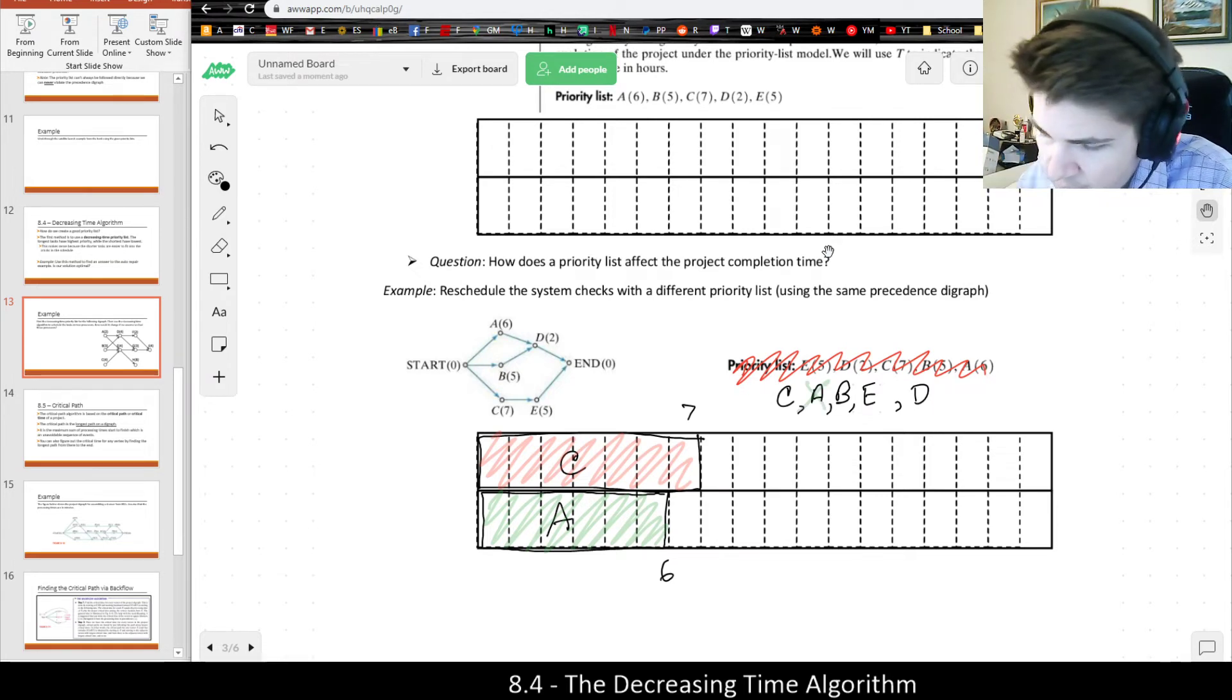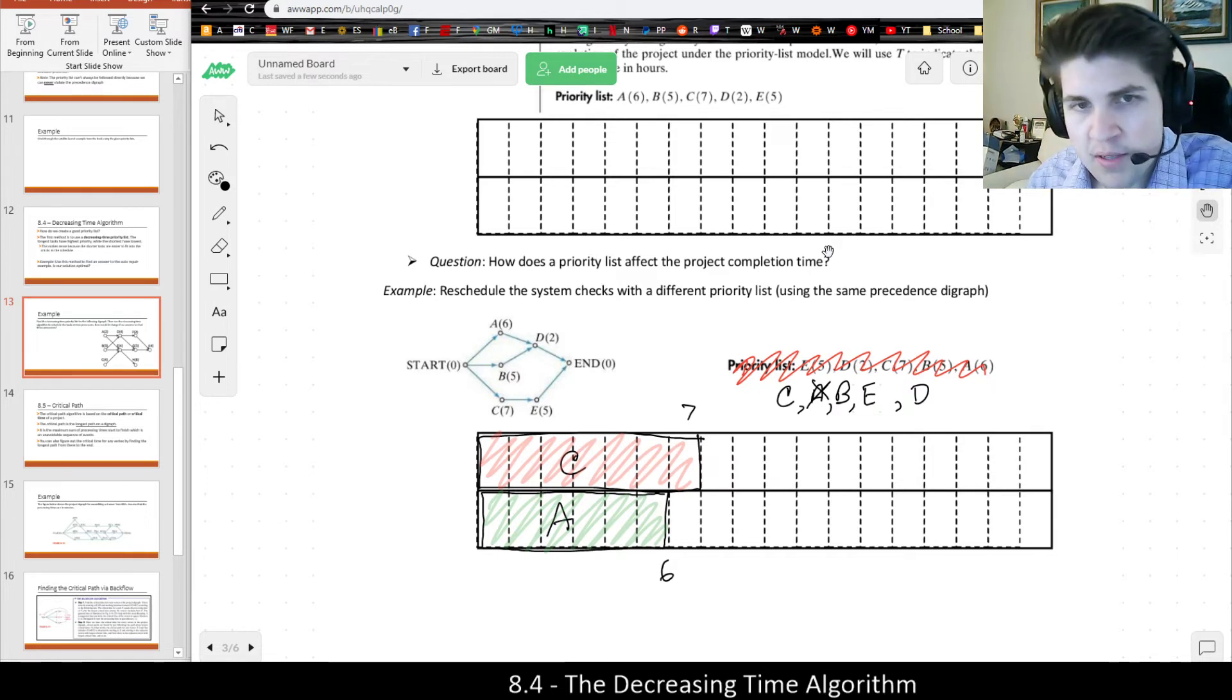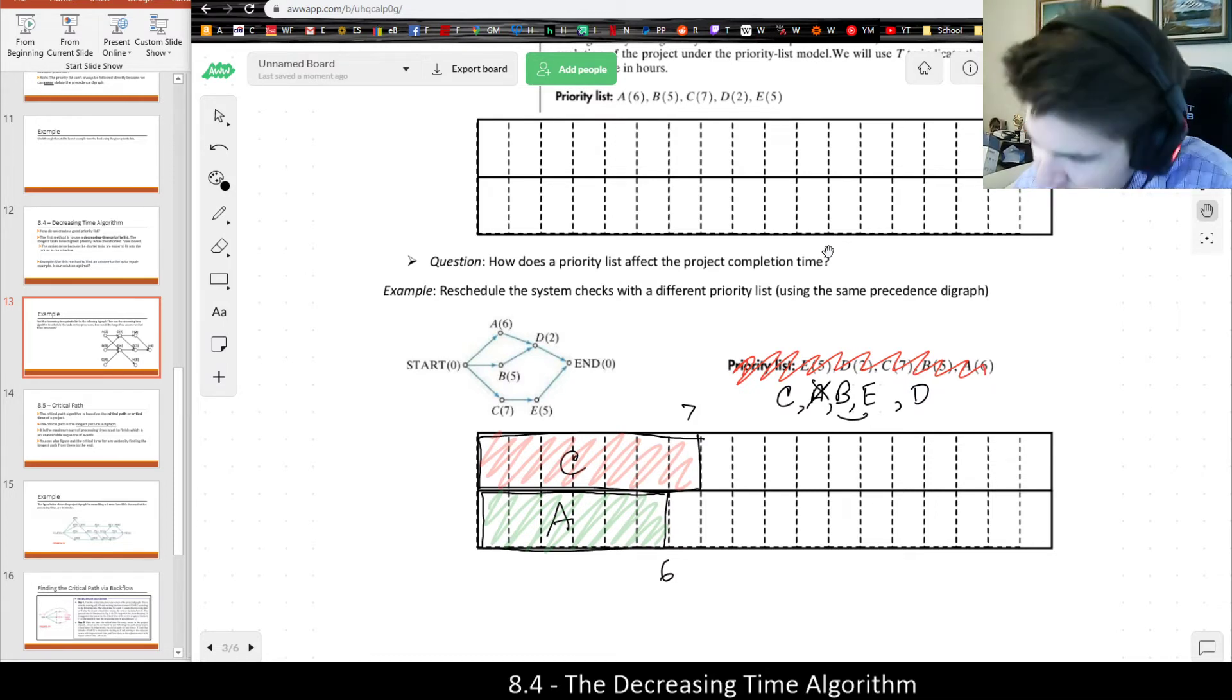B was already ready. So B is going to come next. A is done. B is next. B is five. So one, two, three, four, five. Technically E, and actually if we were to put E forward, notice that E wouldn't be ready because C is not done. So even if I were to switch these, it's going to be the same answer in this case. So B is going to take five, which would put us at 11 hours. B shall be purple.